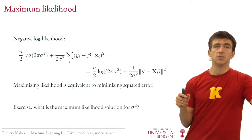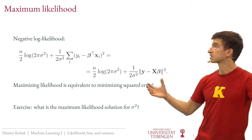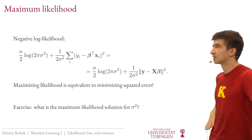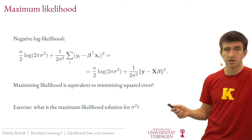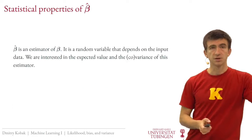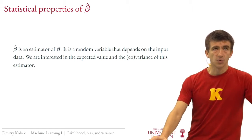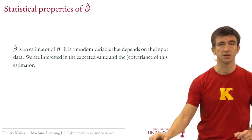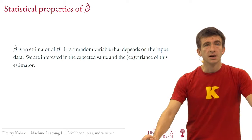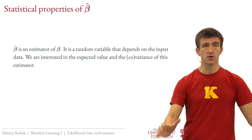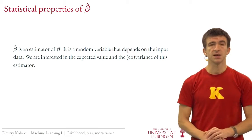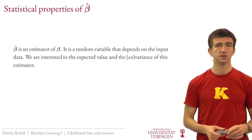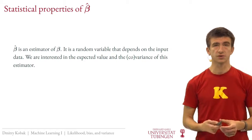One can also ask about the maximum likelihood estimate for sigma squared — this is left as an exercise. Now, since beta hat is the same formula as in previous lectures, maximum likelihood and least squares are mathematically equivalent. We're now thinking about the input data as random, which means beta hat becomes a random variable that depends on the training data. One can ask: what are the statistical properties of beta hat? What is its mean? What is its covariance matrix?